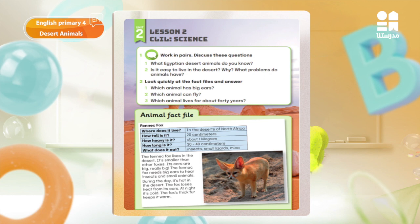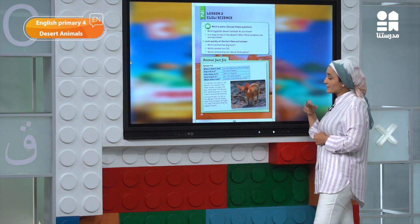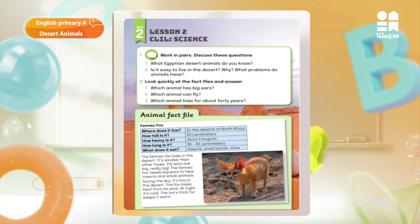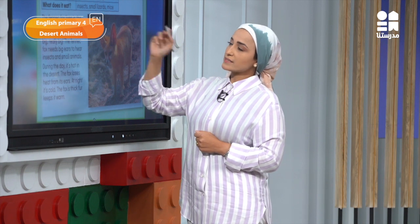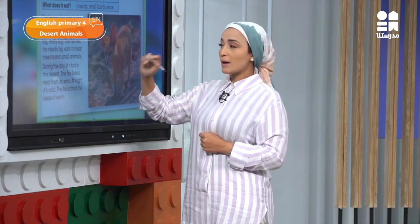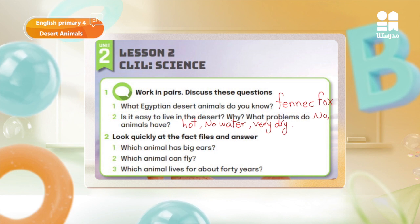Look at this picture — this is the fennec fox. It's very cute, right? Read it carefully in order to understand some facts about this animal. Now let's check some questions about the fennec fox. Question number 2: look at the fact files and answer. Number one — which animal has big ears? The fennec fox. Very good.